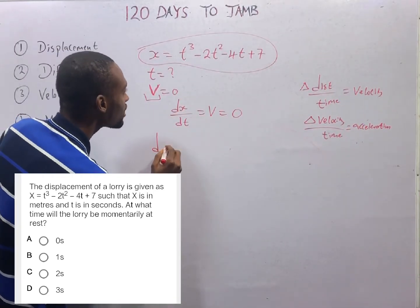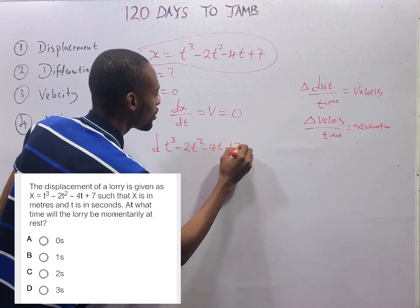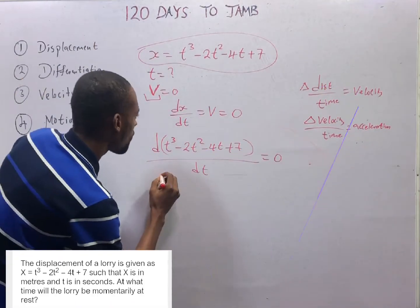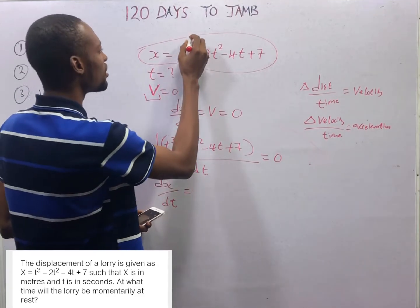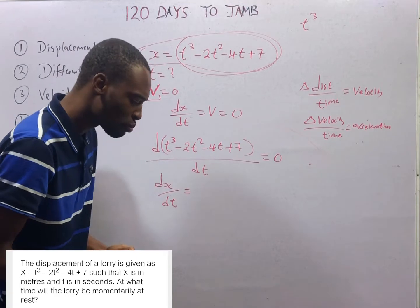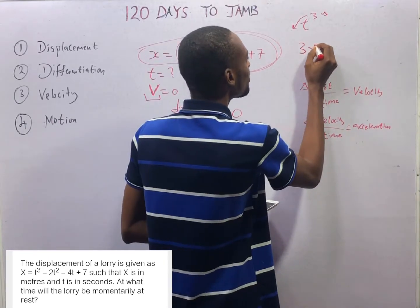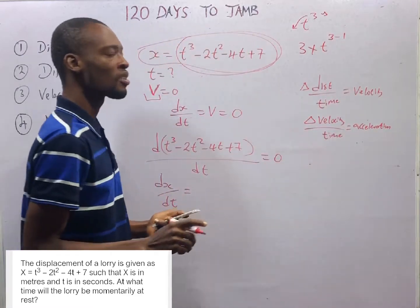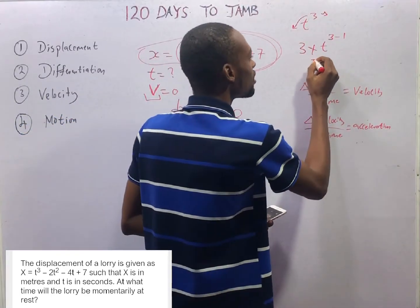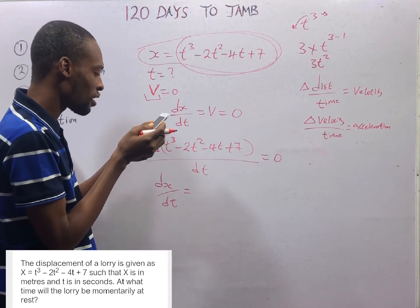ds/dt is the differentiation of t³ − 2t² − 4t + 7 with respect to time, set equal to zero. When you differentiate t³, you bring the power 3 down and subtract 1 from the power: 3 × t^(3−1) = 3t². Use the power to multiply the function, then subtract 1 from the power. So differentiating t³ gives you 3t².